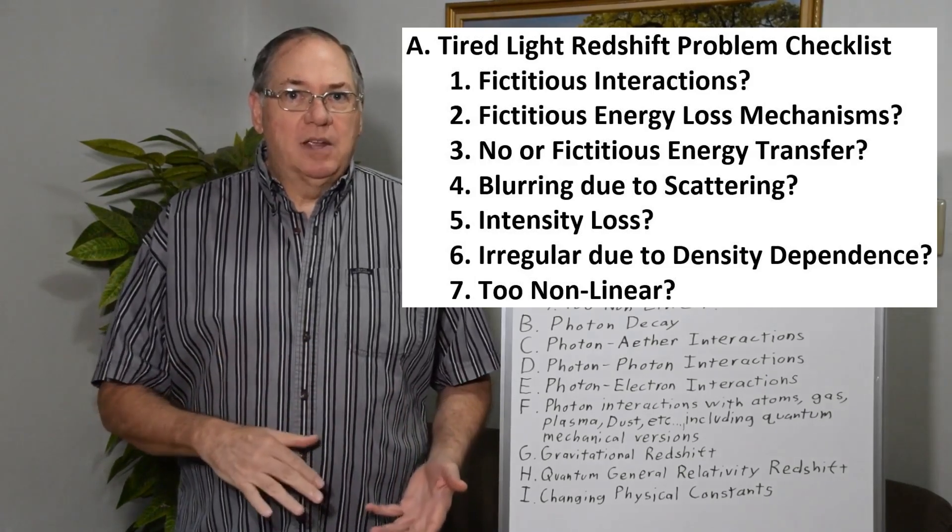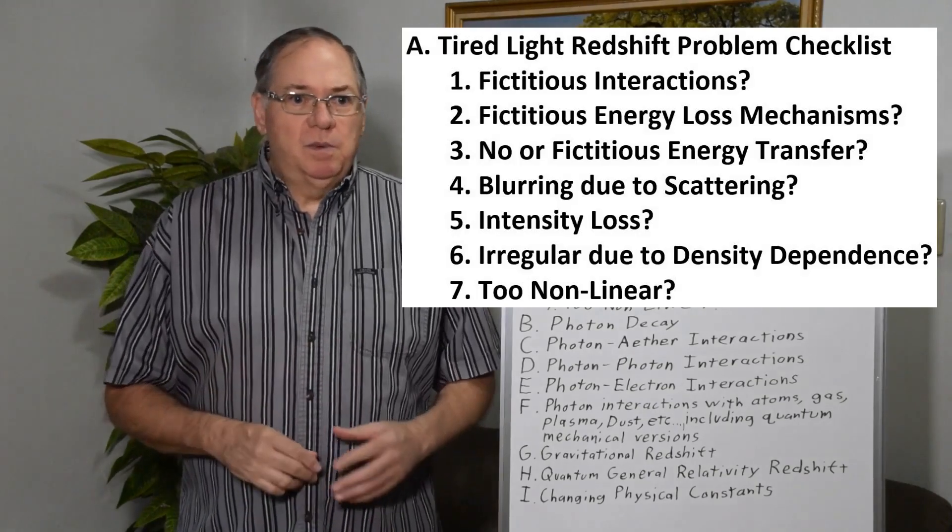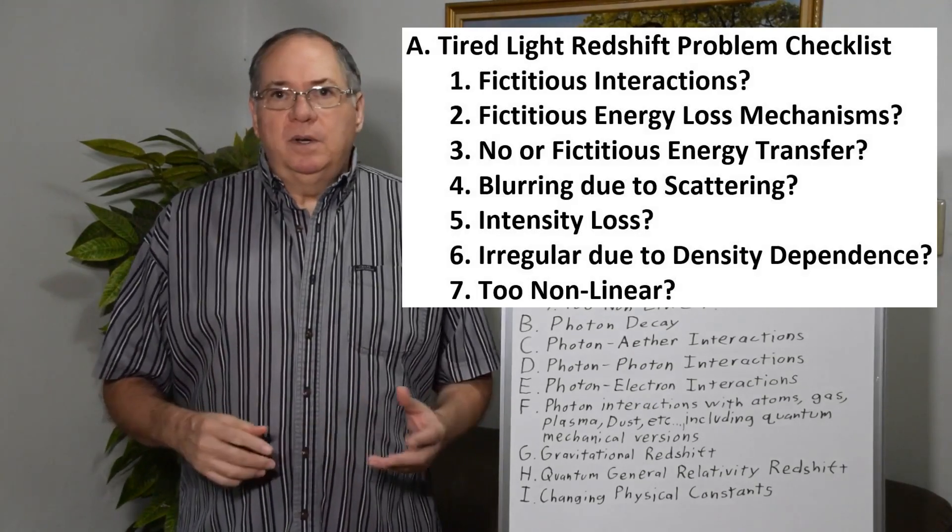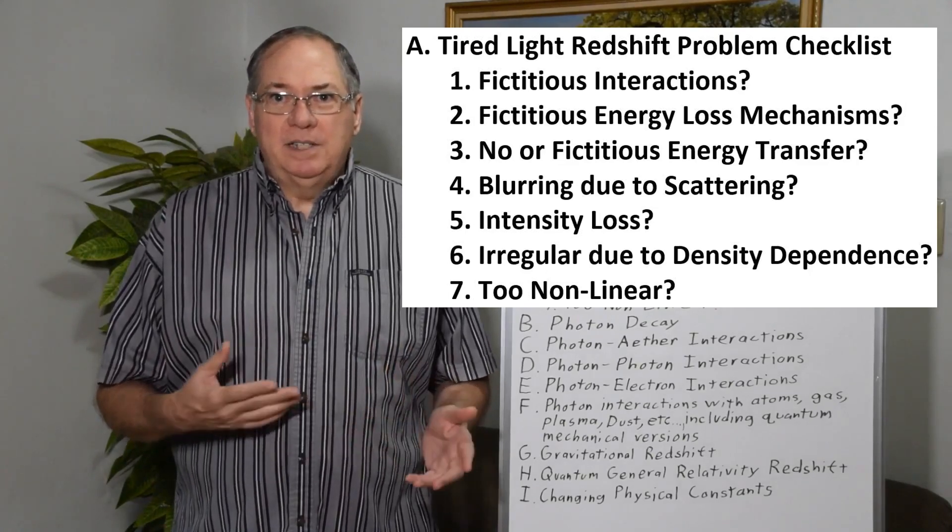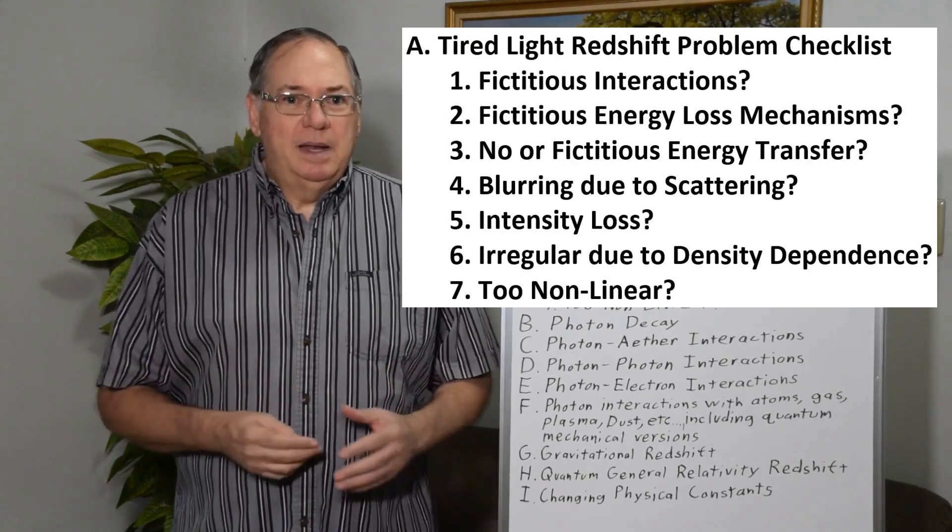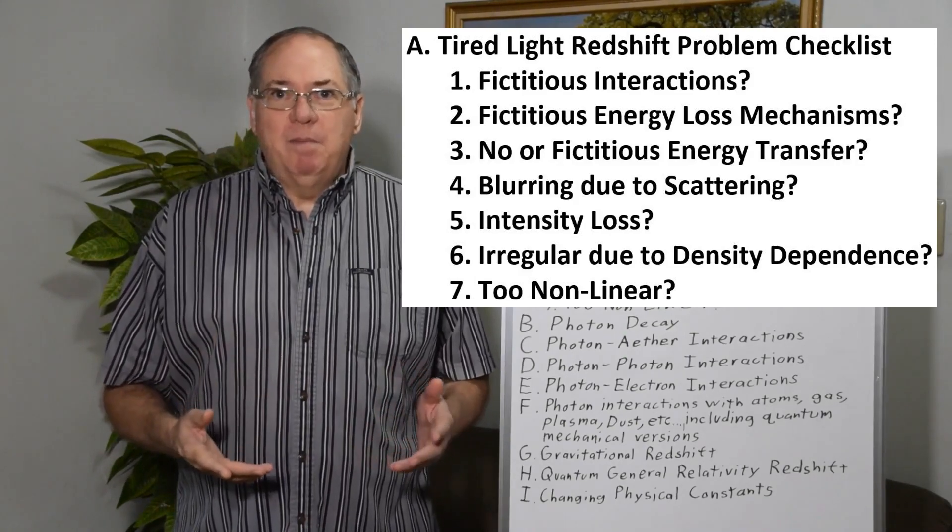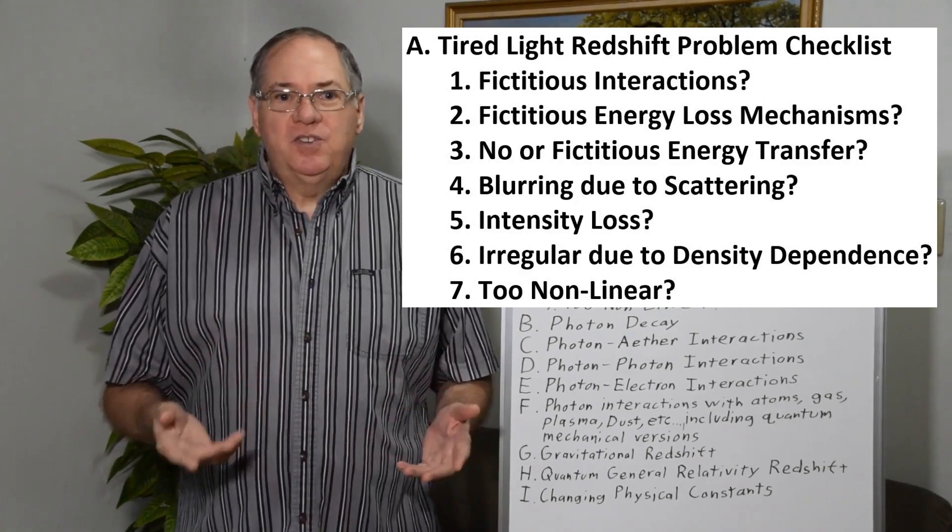I'm just going to talk about the general categories and the general problems with them. But first, whenever you're reading a paper on a tired redshift theory or something about it, there are a few things to keep in mind, so I have like a little checklist.